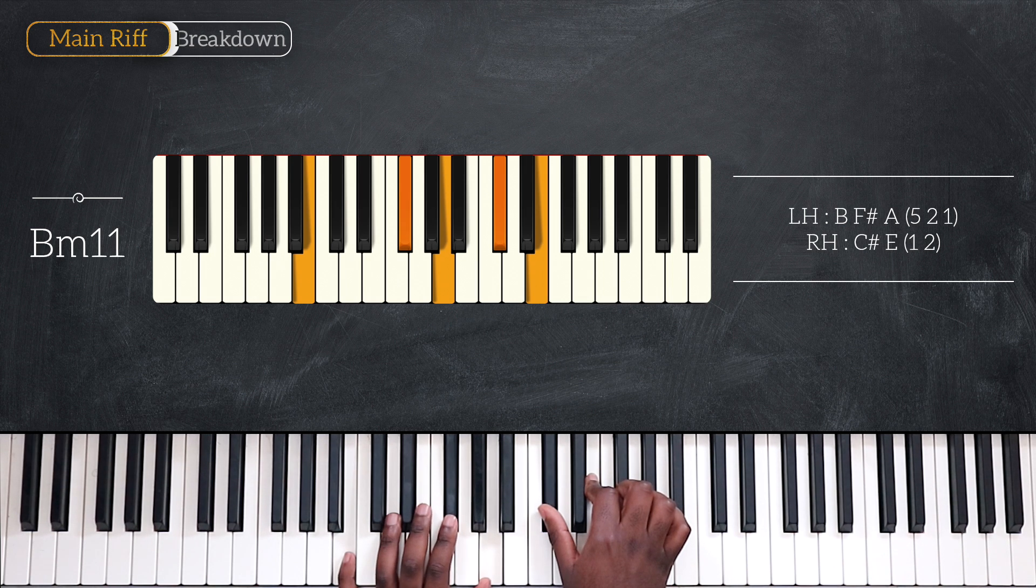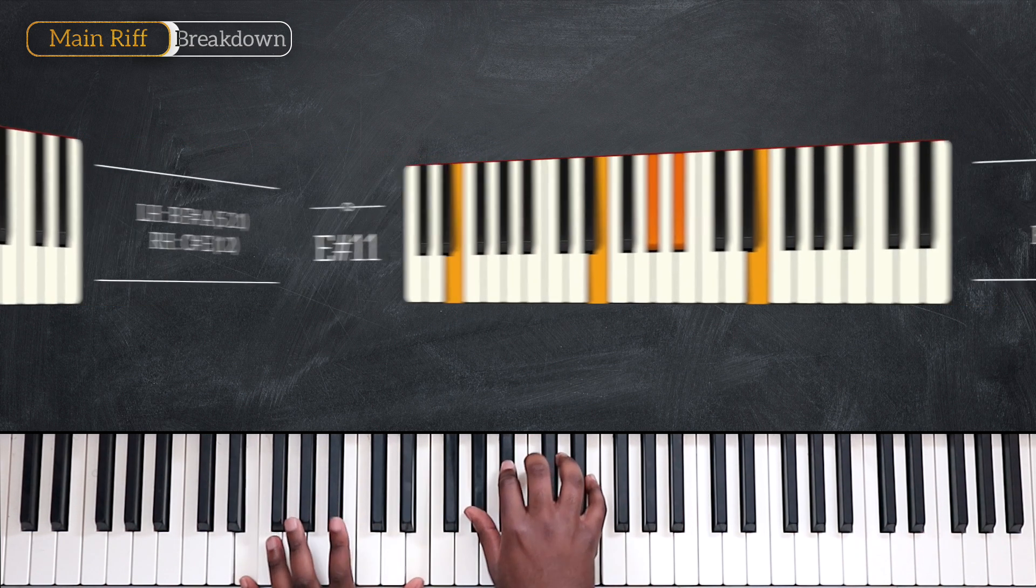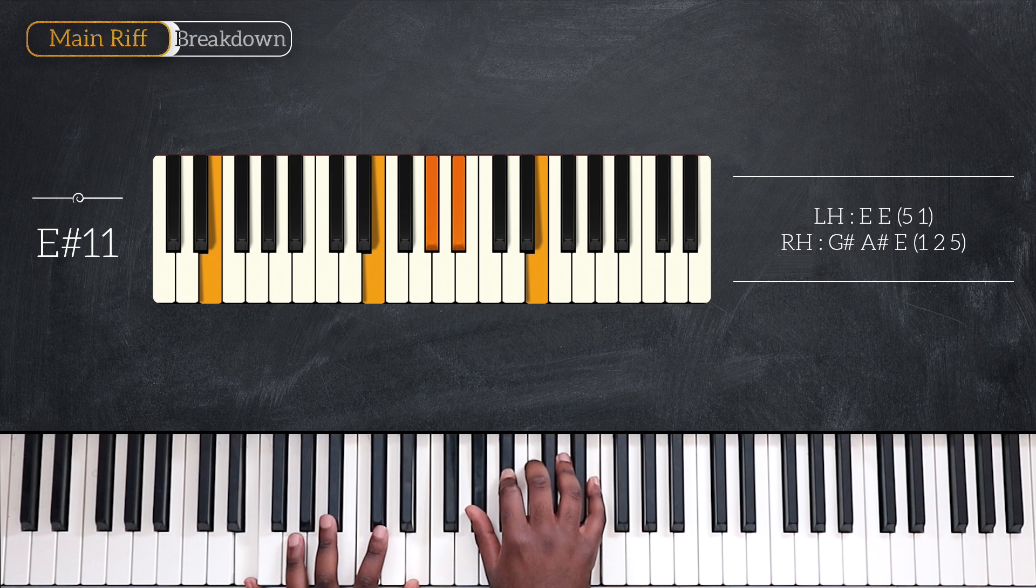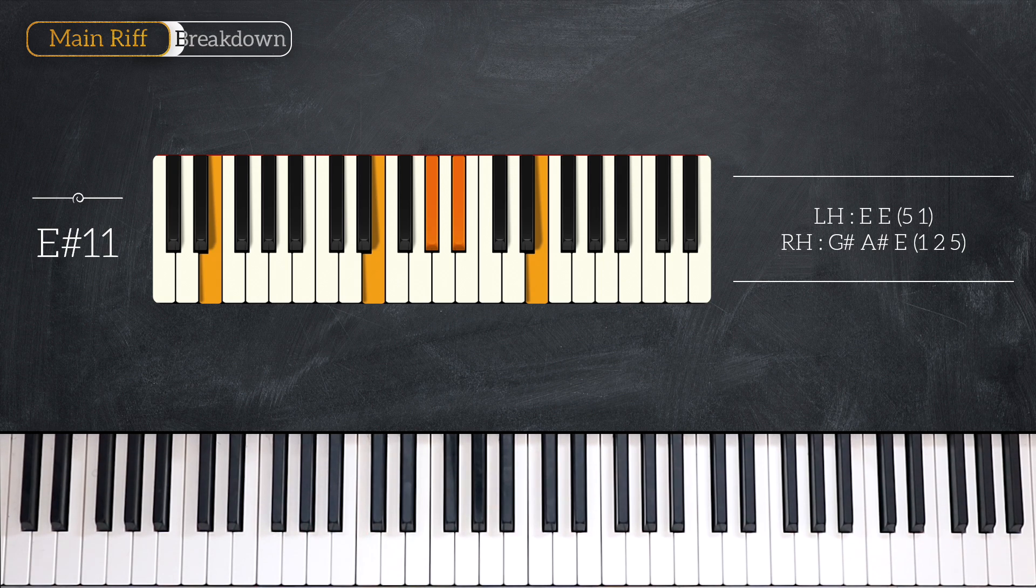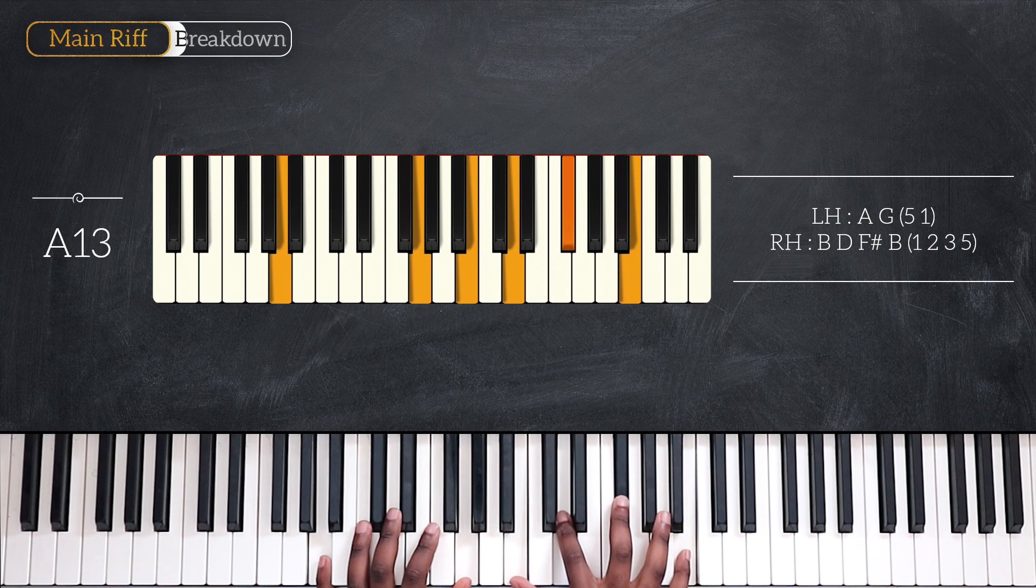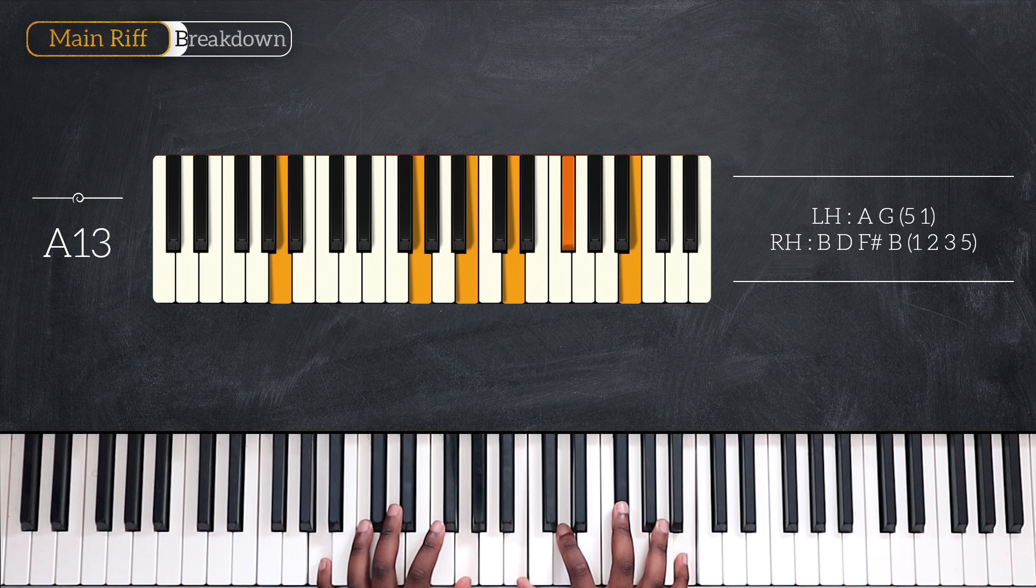And I'm going to end the first part of the main riff with E sharp sharp 11: octave E, G sharp, A sharp, and E on top. And now for the second part of the main riff, we're going to play again A, now A13.